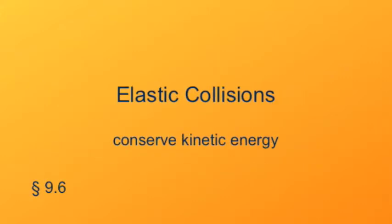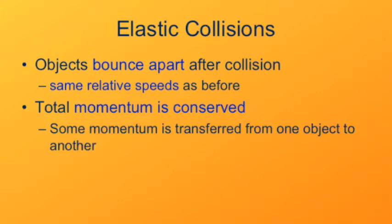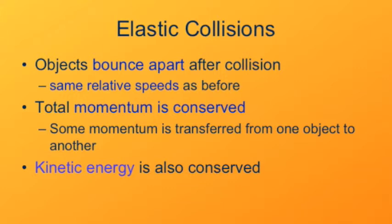The third class of collisions is the elastic collision. In elastic collisions, kinetic energy is conserved as well as momentum. Objects bounce apart after the collision and maintain the same relative speeds as before — relative to each other and relative to the center of mass. Total momentum is conserved, just as in any kind of collision, and some momentum is transferred from one object to the other. The special thing about an elastic collision is that the total kinetic energy of the interacting objects is the same after the collision as before.